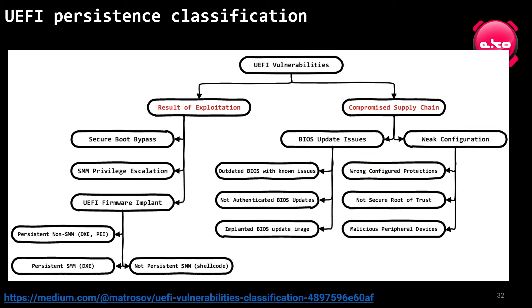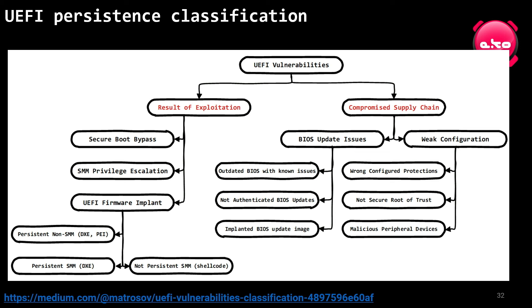I developed a classification of different threats that can lead to rootkit installation on your system, grouped into two categories: result of exploitation and compromised supply chain. These represent actual vulnerability classes that can lead to rootkit installation. Most interesting is exploitation, particularly a class I clarified last year — persistence in memory: executing shellcode inside system management mode without any malicious files stored on the filesystem or SPI flash.